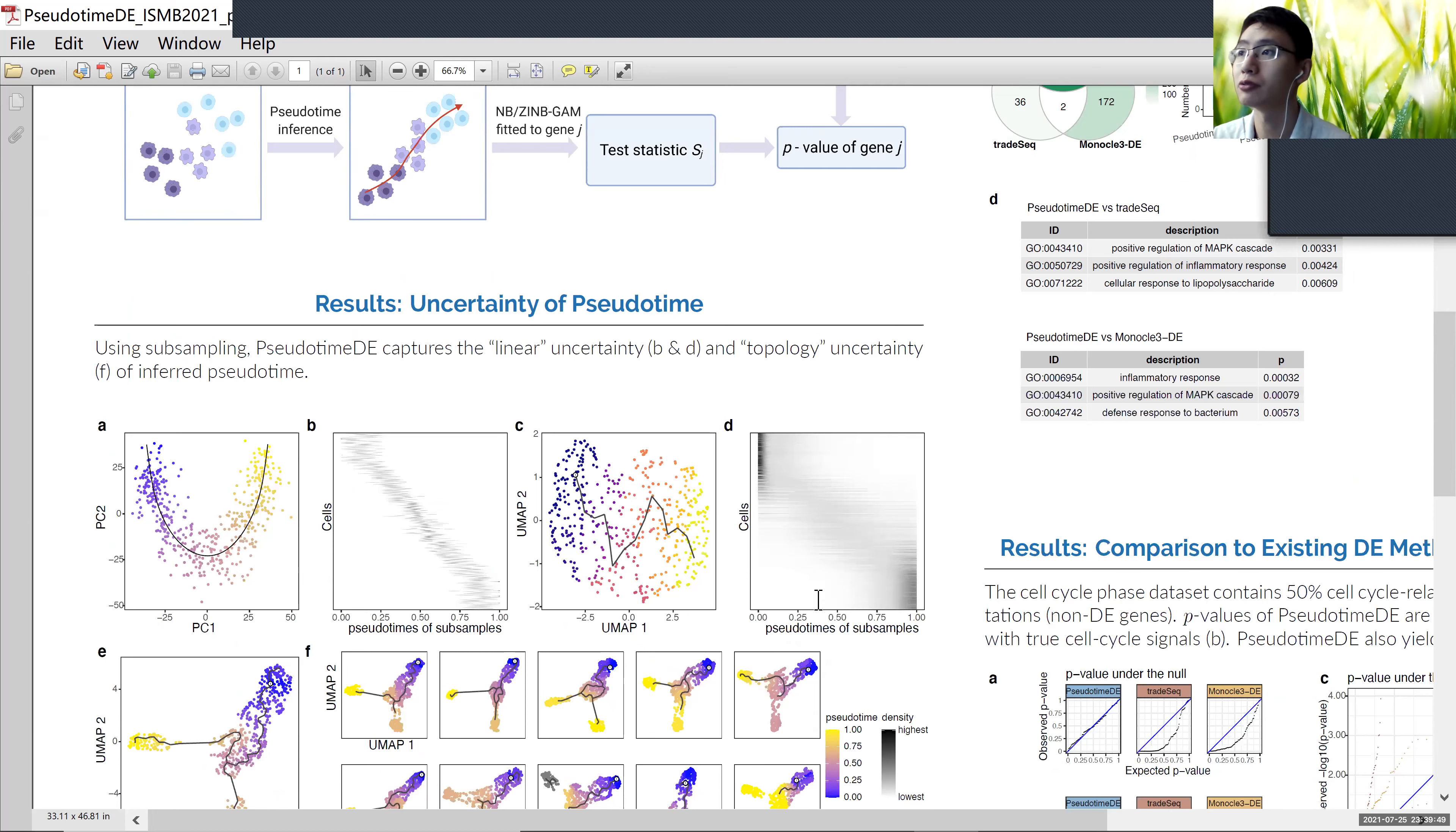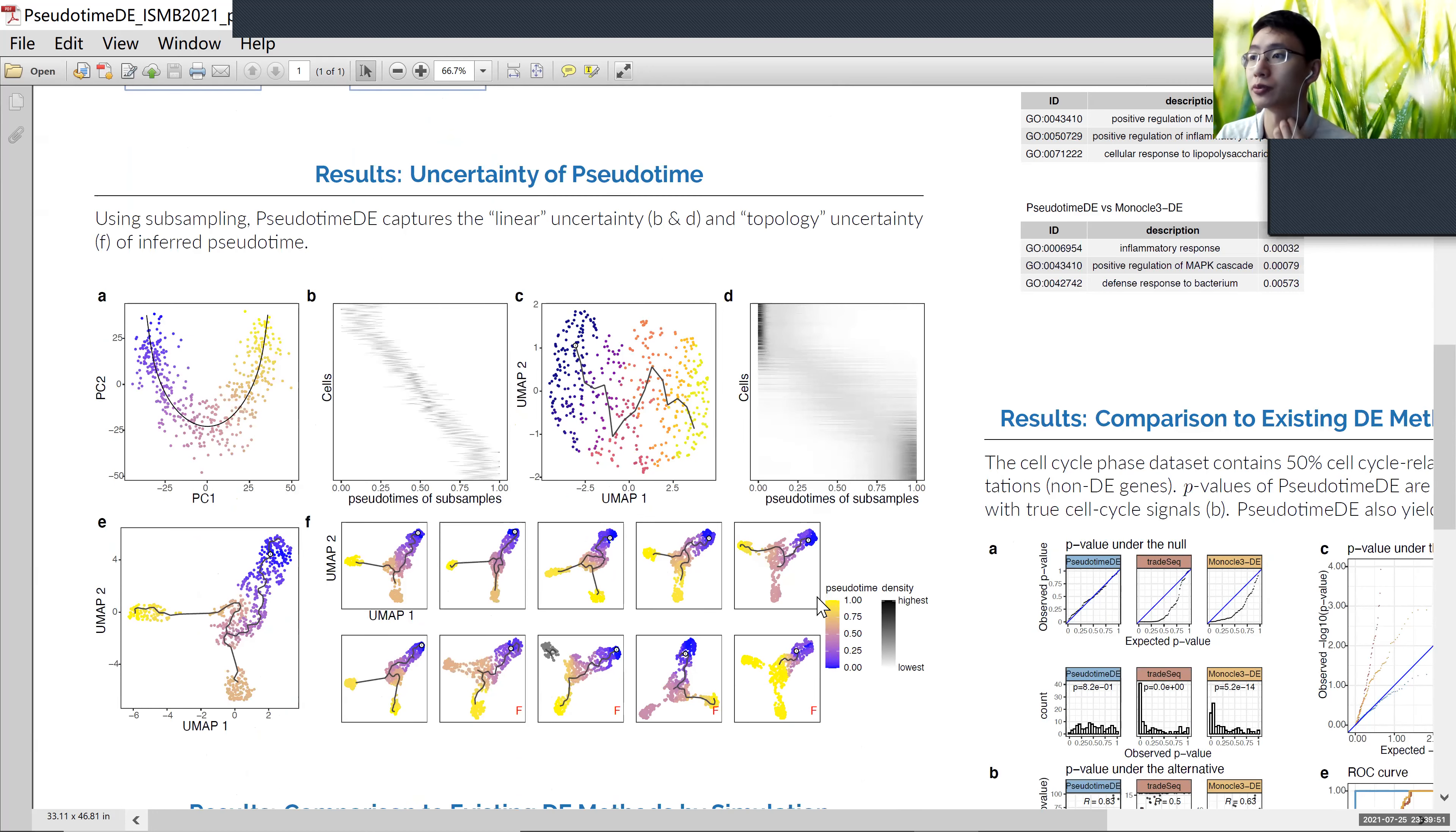First, we want to show the results of the ignored pseudotime uncertainty in nowadays analysis. Here, A and C are inferred pseudotime from two different methods. And B and D show the subsample pseudotime of each data set.